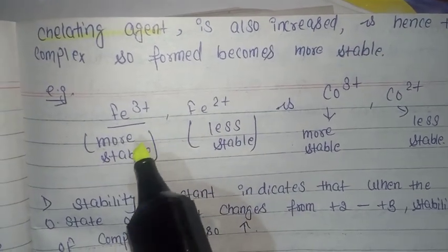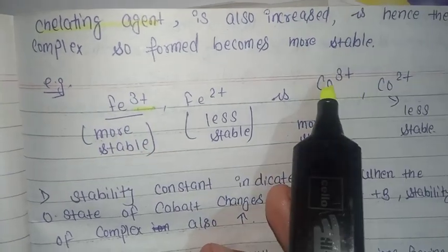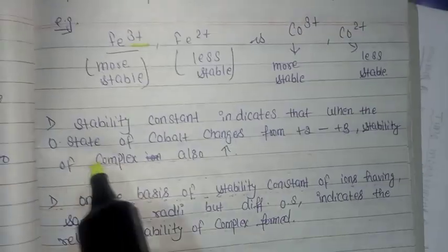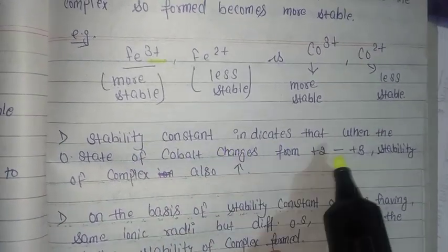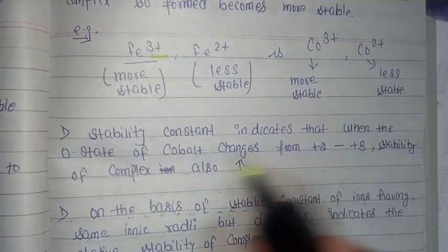For example, iron three positive is more stable than iron two positive. We always remember that the higher oxidation number is more stable. In the case of cobalt, cobalt three positive is more stable compared to cobalt two positive.